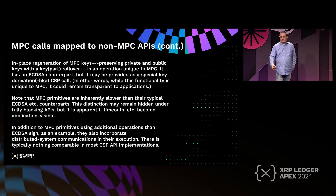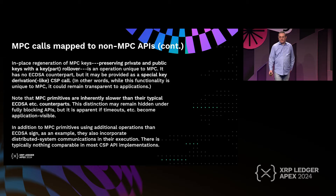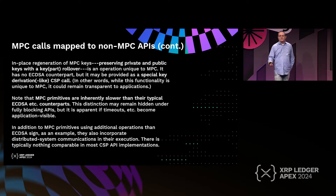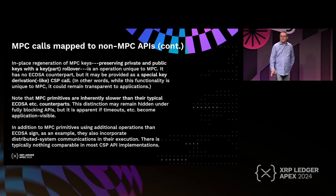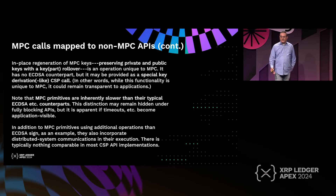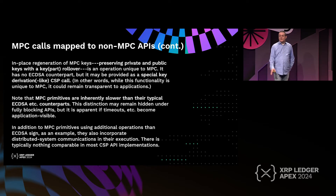There is one particular thing that is difficult to hide: MPC has the property that you can roll over a key collection — you can take existing key shares, regenerate new ones, and they still form part of the same private key. This particular step has no real counterpart in cryptographic service providers (CSPs), because once a key is created in a CSP, it is immutable. This is the only part that doesn't map one-to-one to CSP calls.